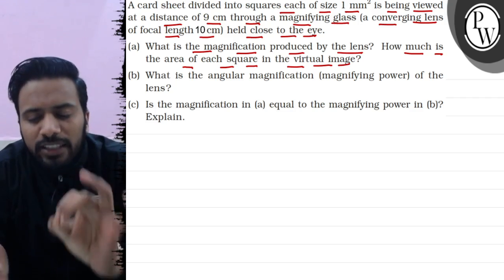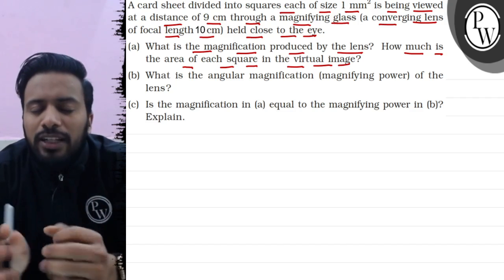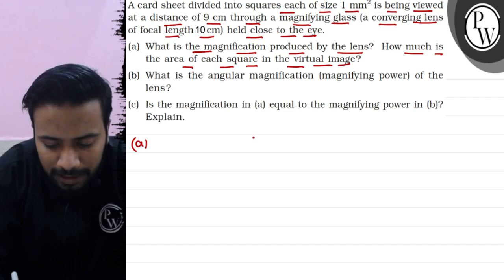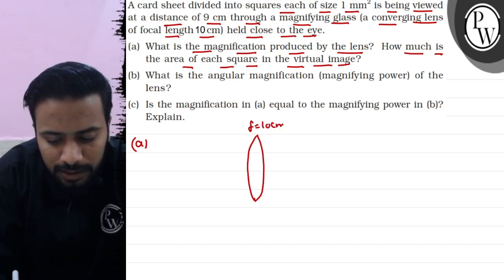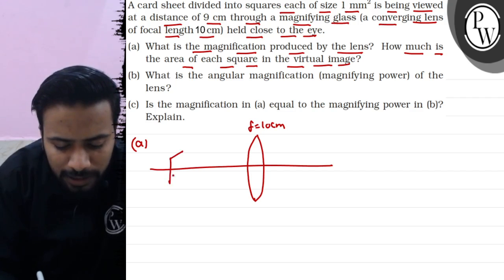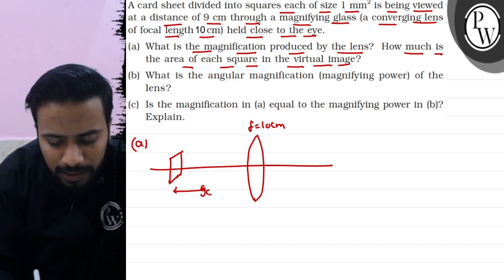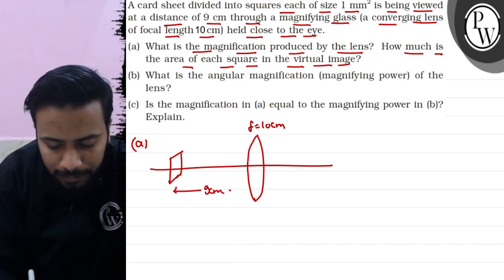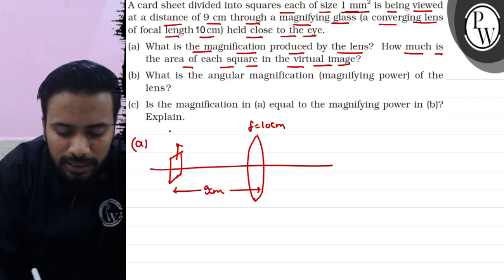We are asked: what is the magnification produced by the lens, and how much is the area of the magnified image of the sheet? Looking at the diagram, we have a converging lens with focal length 10 cm, a principal axis, and the object is placed at 9 cm distance. The object is the 1 mm square card sheet.